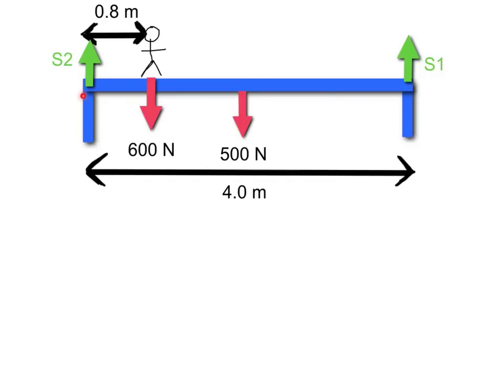So, what we do is we take moments about the left-hand support first, and we work out the moments from there. And we know because this system is in equilibrium, the total moment is going to be zero. So, the clockwise and anti-clockwise moments must be balanced. Clockwise moments are from the weight of the gymnast and the weight of the beam. So, let's work those out and add them together.